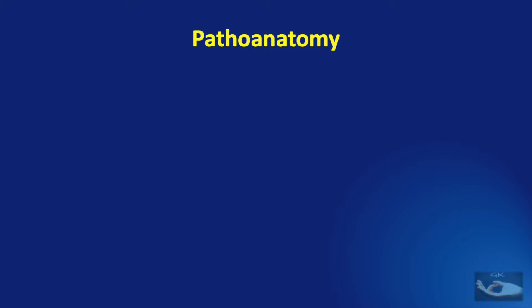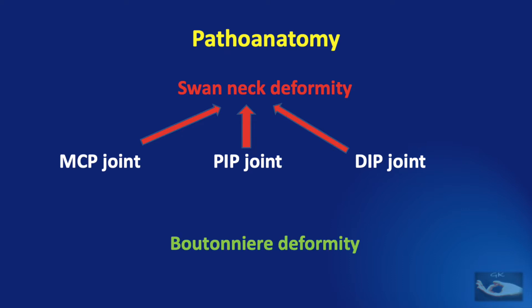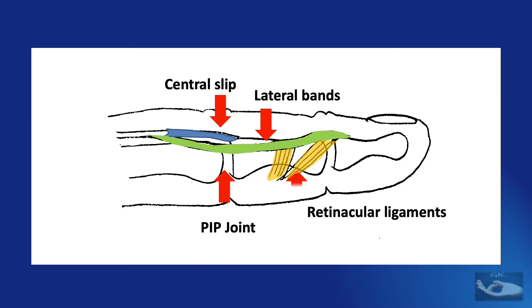Before understanding the patho anatomy of how the Boutonniere deformity develops, one important point: the Swan Neck deformity can be caused by a problem in the metacarpophalangeal joint, the proximal interphalangeal joint, or the distal interphalangeal joint. But the Boutonniere deformity can be caused only by a problem at the level of the proximal interphalangeal joint. At this level, three forces act on the extensor side: the central slip, the lateral bands, and the retinacular ligaments.